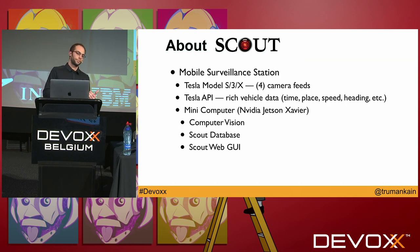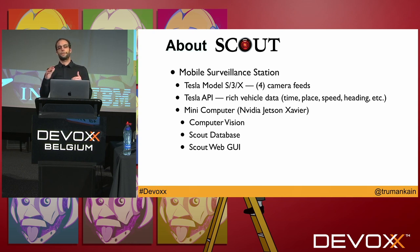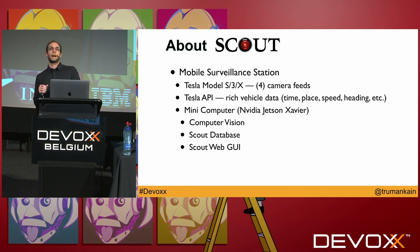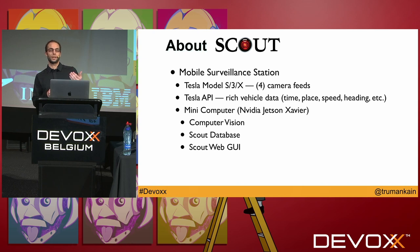Let's talk about Scout. It's essentially turning your car into a mobile surveillance station. Tesla models S, 3, and X have four camera feeds. The framework creates this surveillance station from three main parts: one, the vehicle — Tesla model S, 3, or X; two, the Tesla API — unofficial, but Tesla allows you to ping their servers and get rich vehicle data about your vehicle while driving or parked.